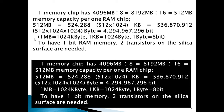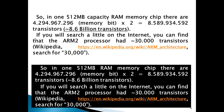1 MB equals 1024 KB, 1 KB equals 1024 bytes, and 1 byte equals 8 bits. To have 1 bit of memory, 2 transistors on the silica surface are needed. So in one 512 MB RAM memory chip, there are about 4.3 billion memory bits multiplied by 2, which equals about 8.6 billion transistors.